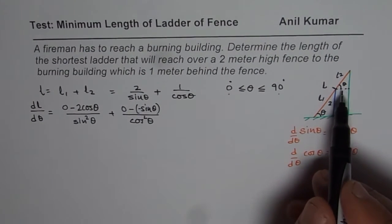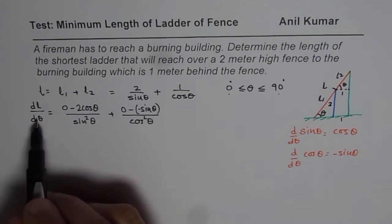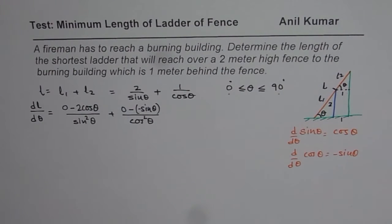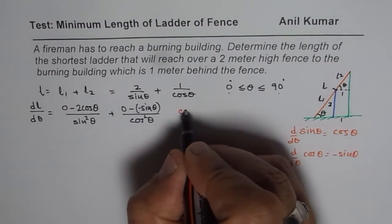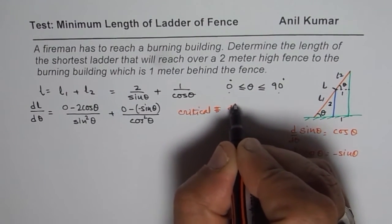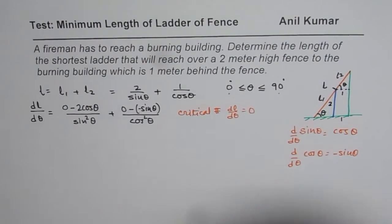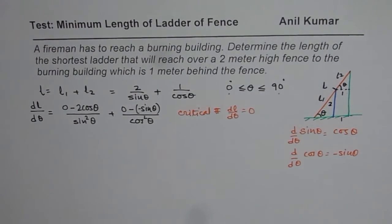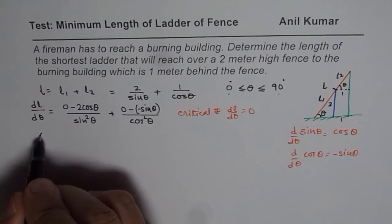So this for optimization, dL/dθ should be 0. So we will now find the critical number. And we say for critical number, dL/dθ should be equal to 0. So equating this to 0 and then solving for theta, we can actually get the solution.